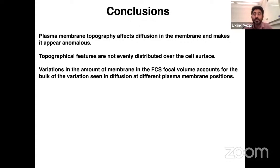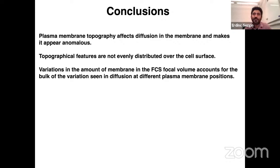A related question: would there be a difference between raft and non-raft markers? The intensity control makes total sense if the probe doesn't partition preferentially, but if the probe is excluded from some ordered domains, the intensity could skew measurements — the probe may not represent total membrane accurately. That could help explain why we didn't see 100% correlation between transit times and topography, though there are other possible reasons too.